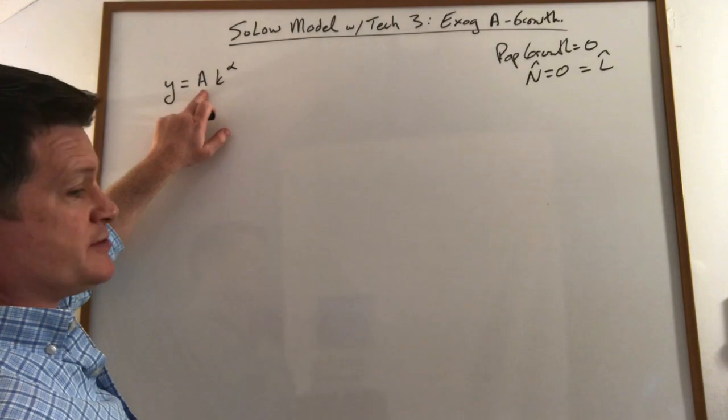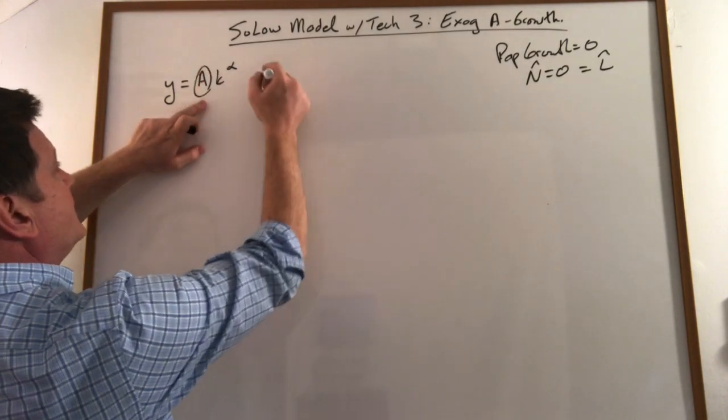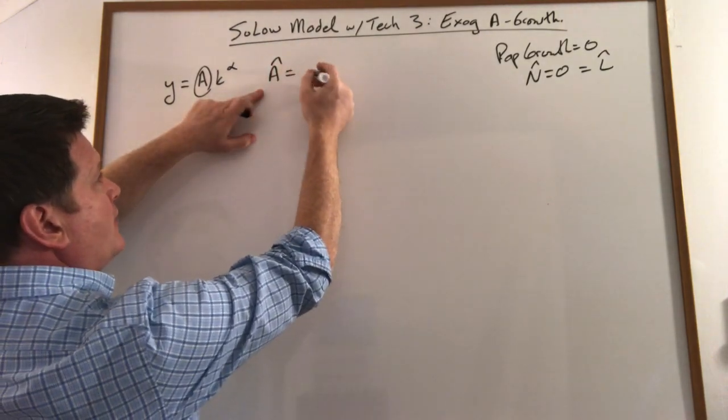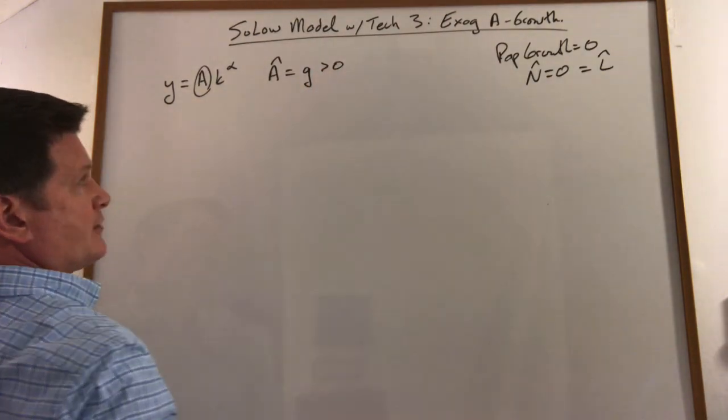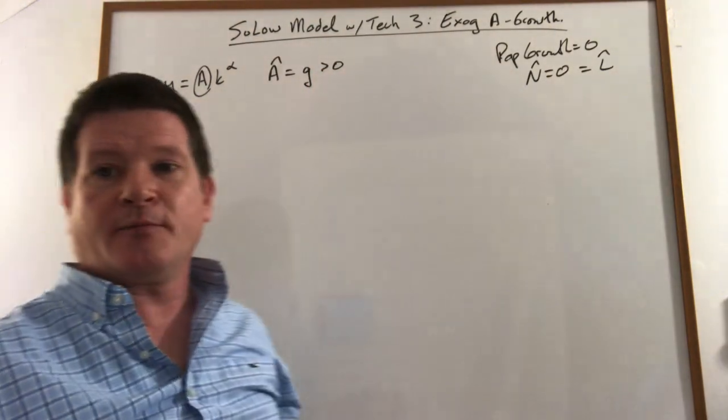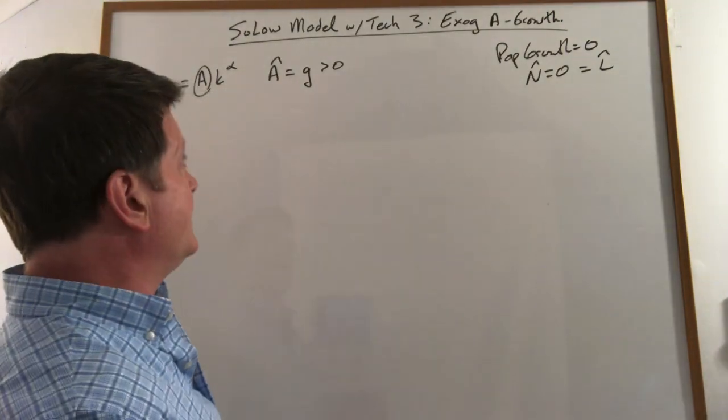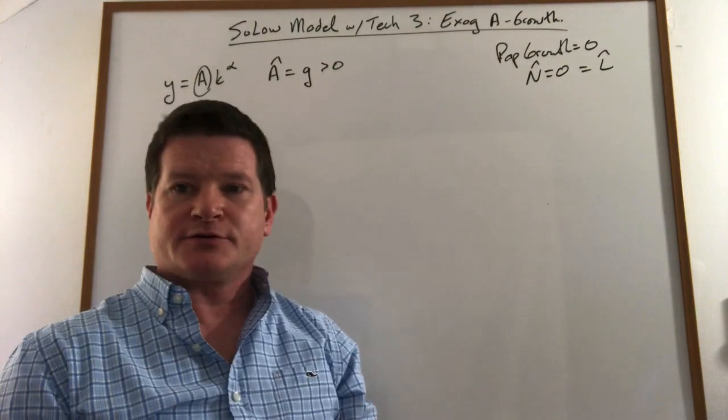Now, technology shows up right here. So what we want to look at is this growth rate now being positive. So we'll let it be something like G, where G is greater than zero. G could be any number, three percent, two percent, five percent, whatever you want, but it's something greater than zero when we want to add technological growth.